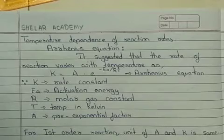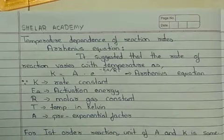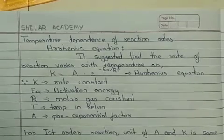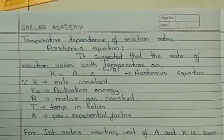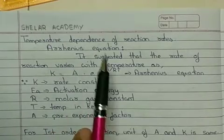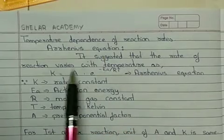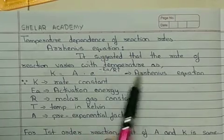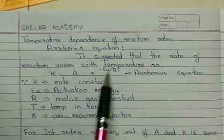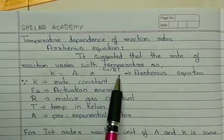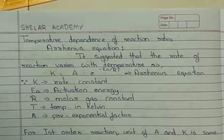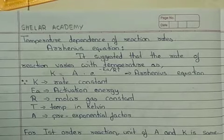A mathematical relationship between energy of activation, rate constant, and temperature has been established by Arrhenius, which is called the Arrhenius equation. Arrhenius equation suggested that the rate of reaction varies with temperature as: K equals A into e raised to the power minus Ea upon RT. This is one form of the Arrhenius equation.